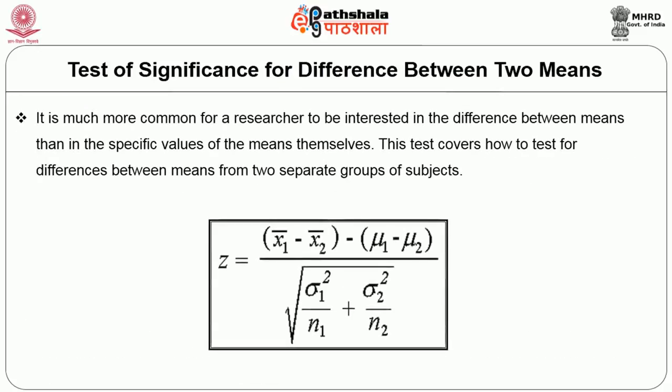Let us now move on to the test of significance for difference between two means. It is much more common for a researcher to be interested in the difference between means rather than the specific value of the means themselves — for example, what is the difference between the mean score of males and females in a class? This test covers how to test for differences between means from two separate groups. The formula for two group means is given here.